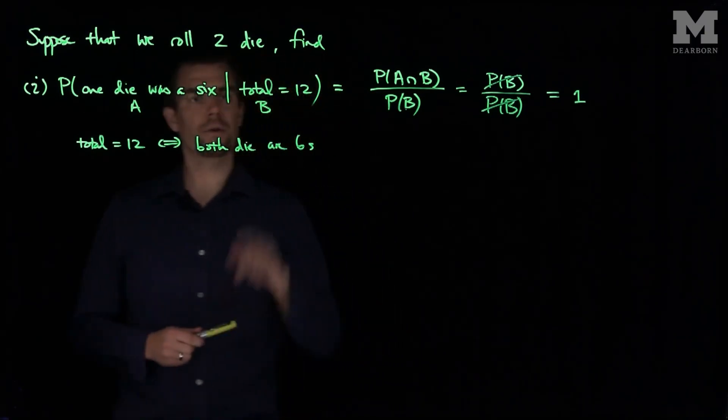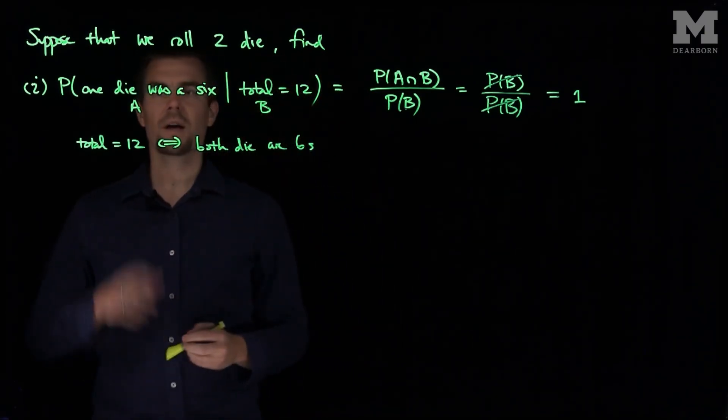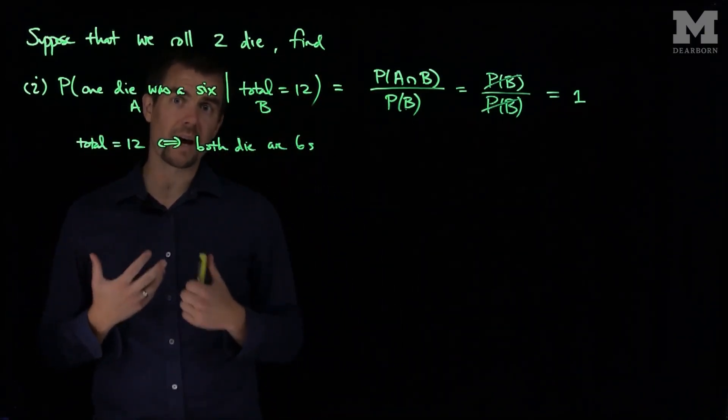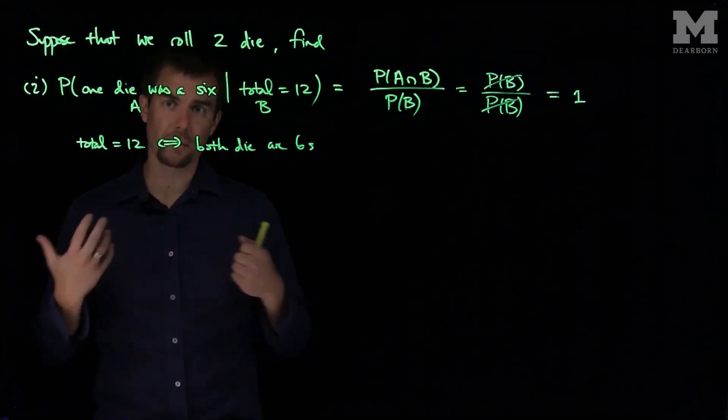And that makes sense because if we know that the total is equal to 12, that automatically implies that both of the die are equal to 6, so it's a certainty so the probability is equal to 1.